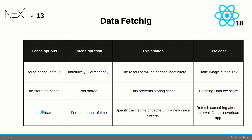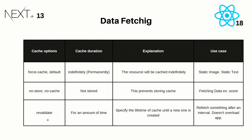The 'revalidate' option caches data for a specified amount of time — 10 seconds, 20 seconds, or 100 seconds. After that duration, you'll see new data; until then, you see the old data. It specifies the lifetime of a cache until a new one is created. The use case is when you want to refresh data at intervals without overloading your application — it revalidates after the number of seconds you specify.